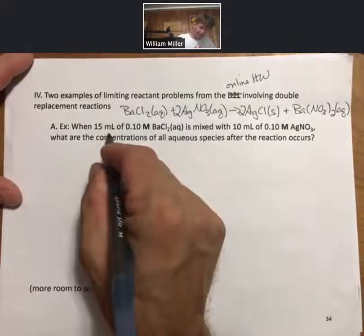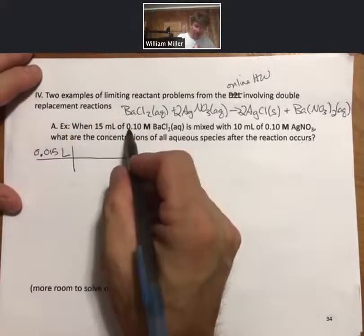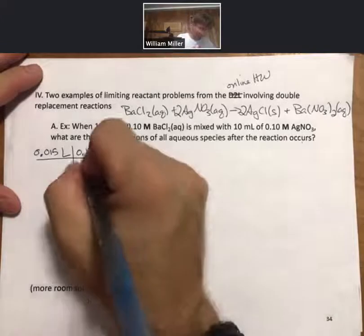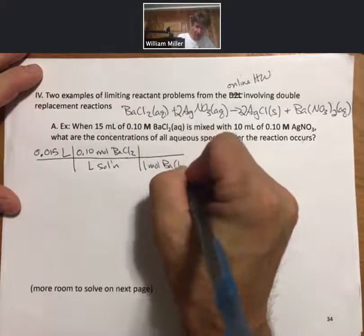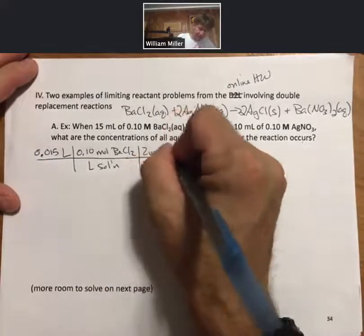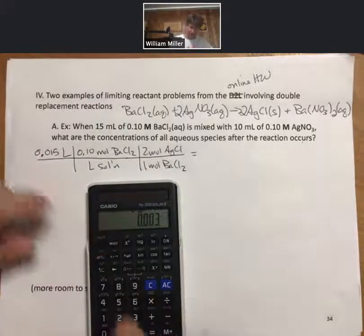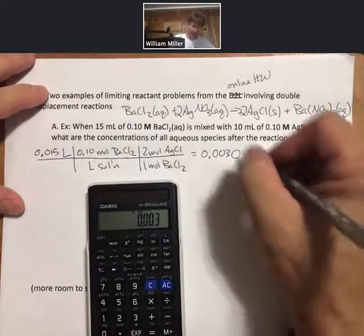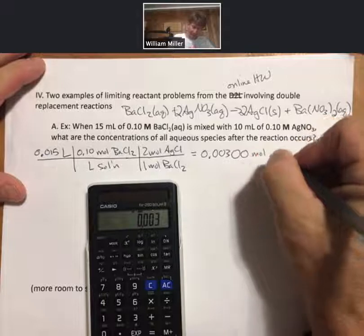For barium chloride, I have 15 milliliters — that is 0.015 liters — of 0.10 moles of barium chloride per liter of solution. With a one mole barium chloride to two moles silver nitrate ratio, I can figure out the moles of silver chloride I could make if barium chloride is my limiting reactant. My answer is 0.003, or to three sig figs, 0.0030 moles of silver chloride.